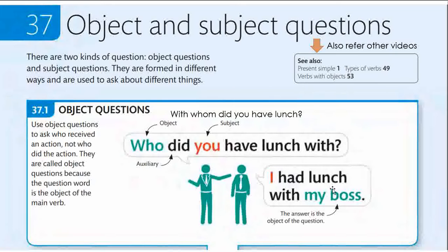Let me first point out an example: 'I had lunch with my boss.' If you ask 'with whom did you have lunch?' the answer is 'my boss.' If you ask 'what did you have lunch?' — when you ask these kinds of questions, you get two types of replies. The reply is definitely the object of the verb.